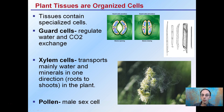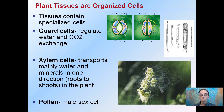In plant tissues there are organized cells. We have guard cells, which regulate water and carbon dioxide exchange. These guard cells are on the underside of leaves and they are pores. Plants need to breathe, so this is what helps allow them to breathe and expel water. During times of water stress, they will close what we call the stomata, which are pores mainly on the underside of leaves.